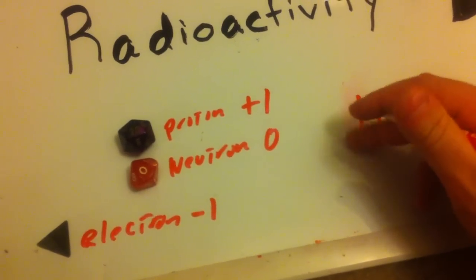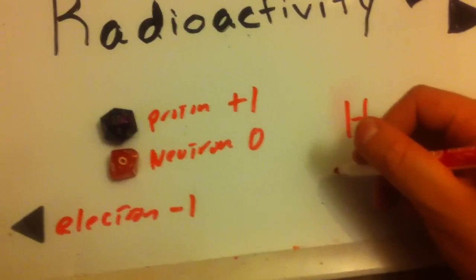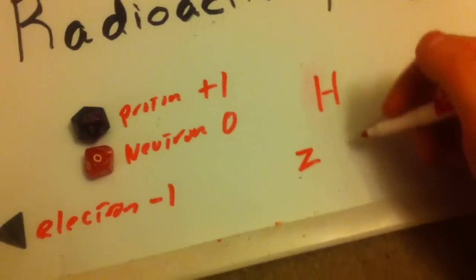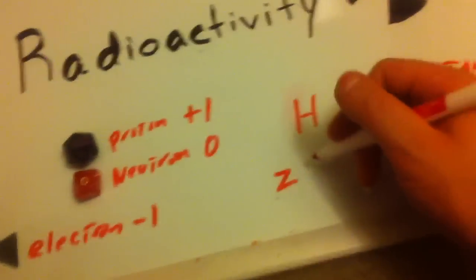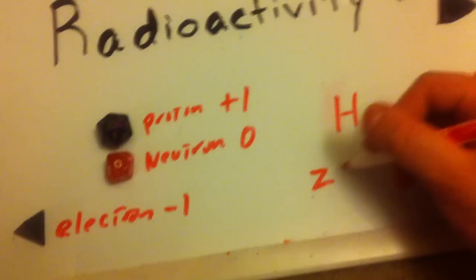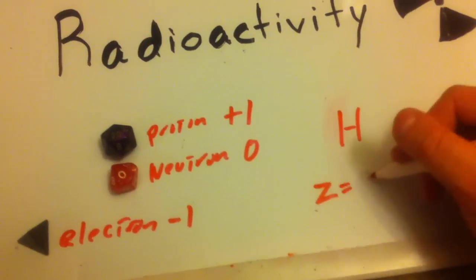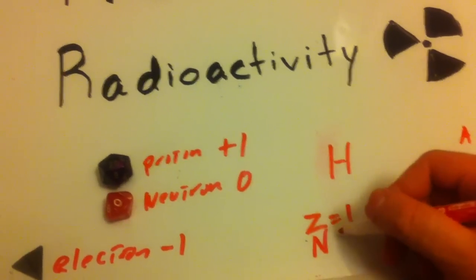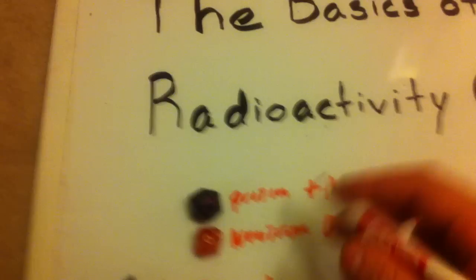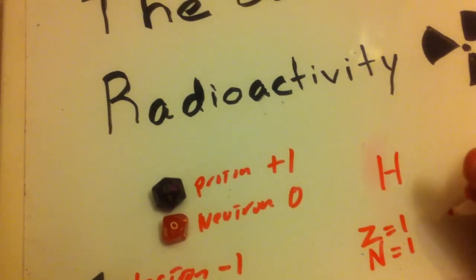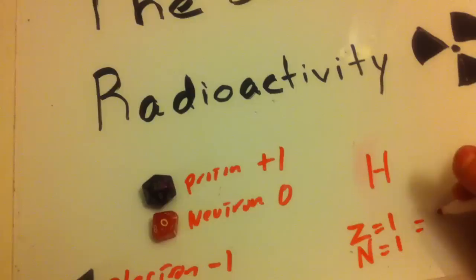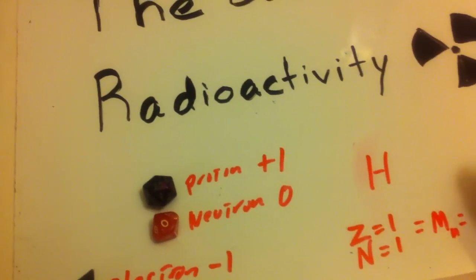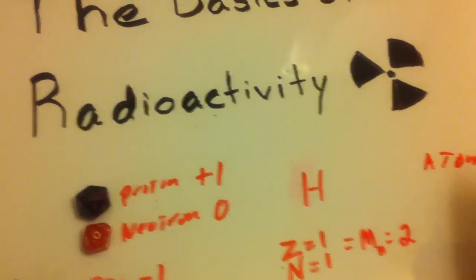Let me show you how to describe that. The atomic number is characterized by the letter Z — this just equals the number of protons in it. For hydrogen, Z equals one. Its neutron count is equal to one as well. Therefore its mass number is equal to two.